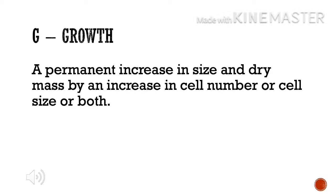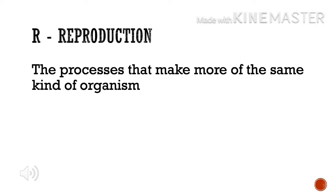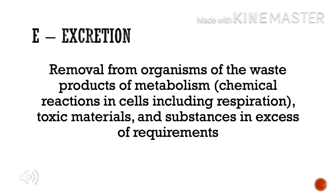G for growth: a permanent increase in size and dry mass by an increase in cell number or cell size or both. R for reproduction: the processes that make more of the same kind of organism. E for excretion: removal from organisms of the waste products of metabolism, chemical reactions in cells including respiration, toxic materials and substances in excess of requirements.